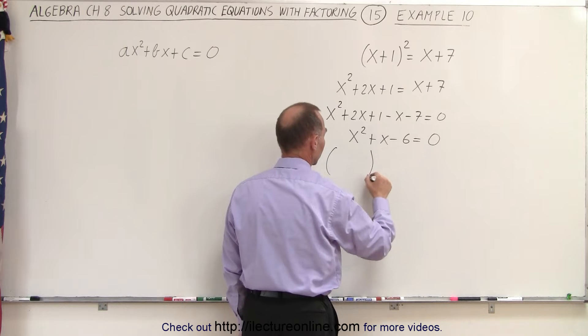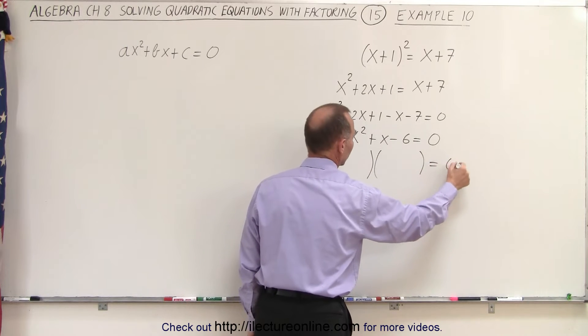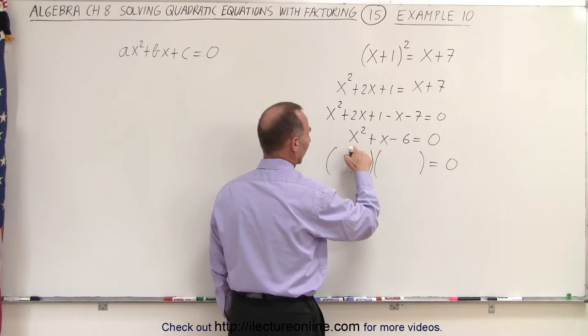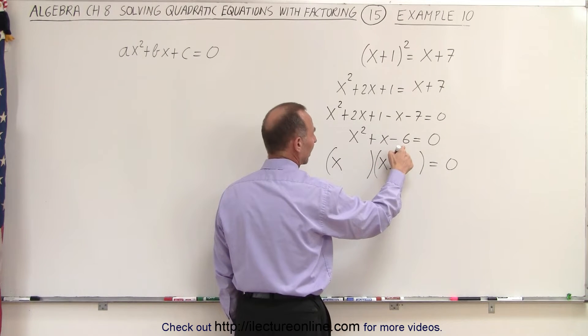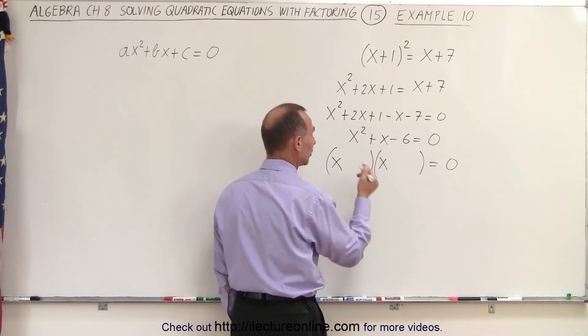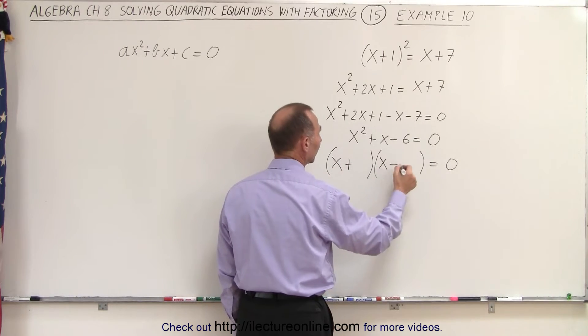When we do we should look something like this. The product of two binomials. For the first term x squared we need an x and an x. The signs we have a negative sign here and a positive sign there. That means we need 1 that's positive, 1 that's negative.